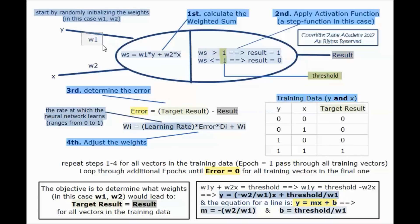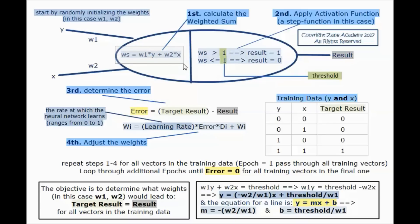We start by randomly initializing the weights w1 and w2, then we go into a loop where we first calculate the weighted sum: ws = w1 * y + w2 * x.